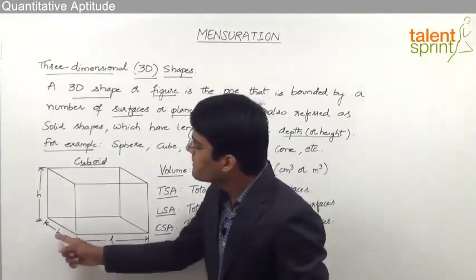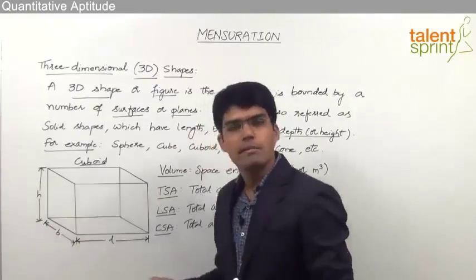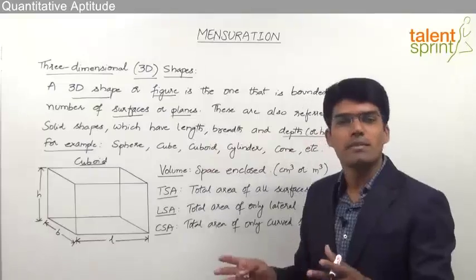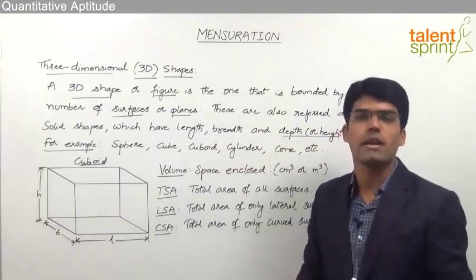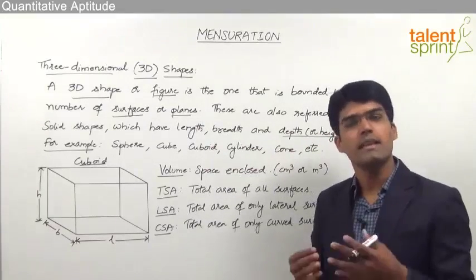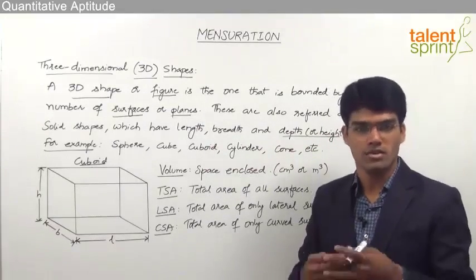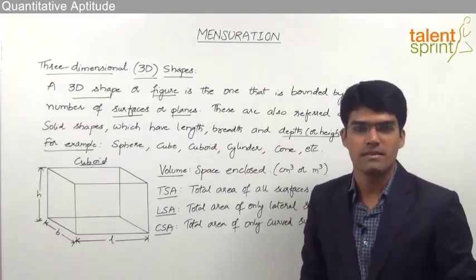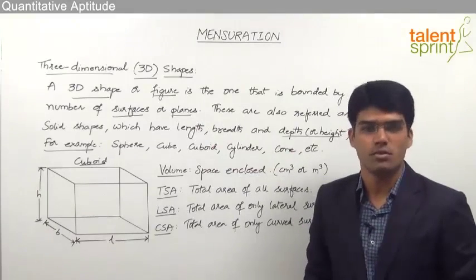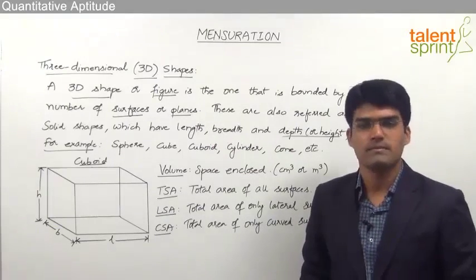Likewise, when all the length, breadth and height become equal, it appears like a cube — that is, like a squared box. Again, in case of a squared box or a cube, there are 6 surfaces or 6 2D shapes.